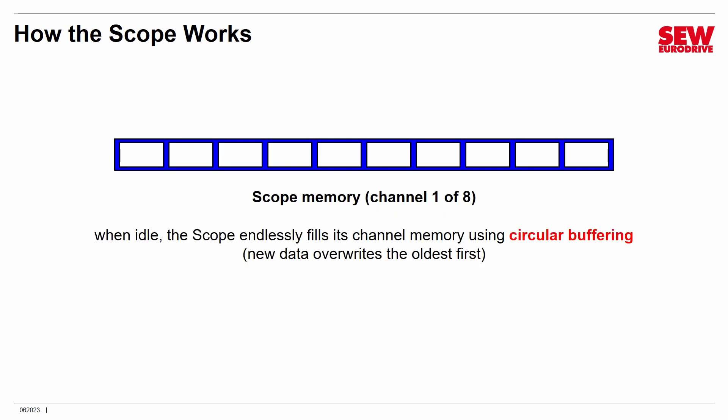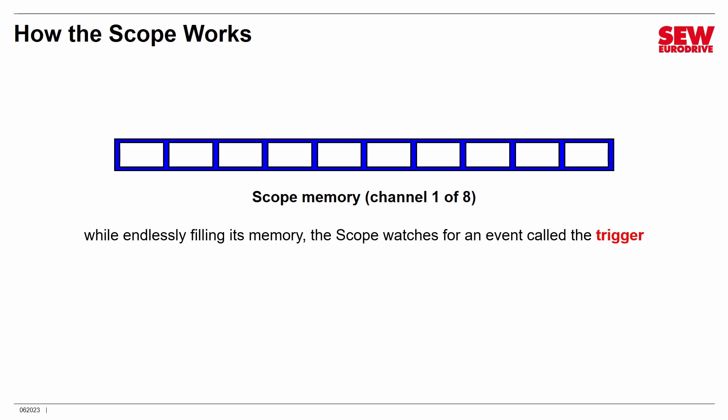Let me explain how the scope handles its memory. When the scope is idle, it's actually working — it's never truly idle. What it does is endlessly fill its channel memory using a technique called circular buffering. The memory starts filling up and then, when it comes to the end, it goes back to the beginning and starts overriding the oldest data first, just keeps going around in a circle. While doing this, it's also watching for an event called the trigger.